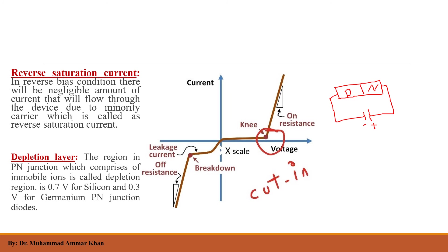Regarding the depletion layer: as we saw earlier, between the P-side and N-side there is a chargeless region formed due to the diffusion process — this is called the depletion layer. The cut-in voltage is the specific voltage point above which the current increases sharply. This cut-in voltage is 0.7 volts for a silicon diode and 0.3 volts for a germanium diode.